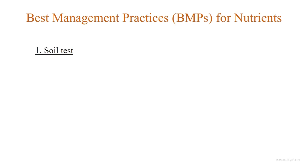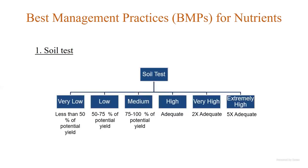Let's talk about some BMPs a farmer can use. The first and foremost BMP is soil testing. It's pretty simple — anyone can collect soil samples and send them to a soil testing lab. The lab classifies these nutrients into different fertility status rankings. If your soil falls under a very low category, it can benefit from fertilizer application; but if it falls under an extremely high category, there is no benefit to adding any fertilizer.